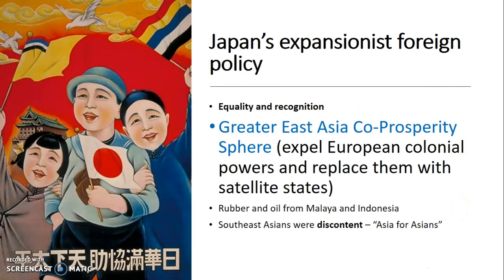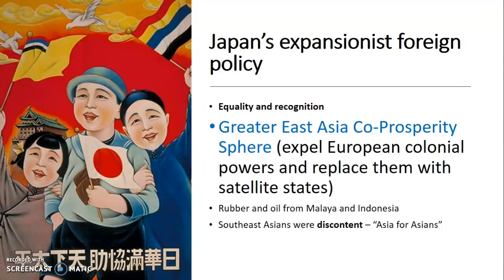At the root of Japan's expansionist foreign policy, they wanted equality and recognition — remember the Washington Naval Conference and the discrimination they faced. They wanted to build a strong Asian empire, a greater East Asia co-prosperity sphere where they would expel European colonial powers and replace them with satellite states. At the same time, they could get resources from Asian countries such as rubber and oil from Malaya and Indonesia. Southeast Asians were also unhappy with colonial powers, and there were those who wanted the 'Asia for Asians' idea. Whether Japan carried out the Greater East Asia co-prosperity sphere sincerely or just to gain Asian support is left for you to decide.